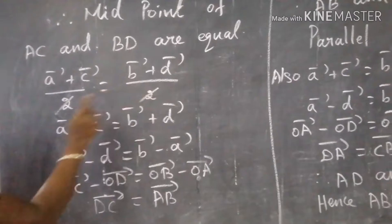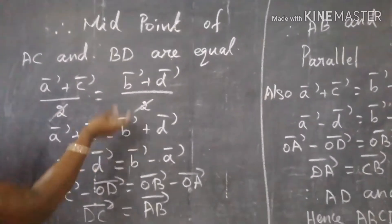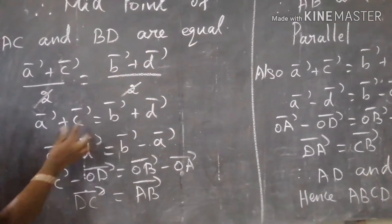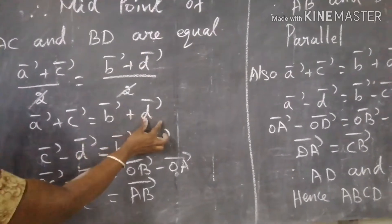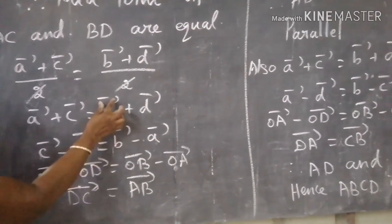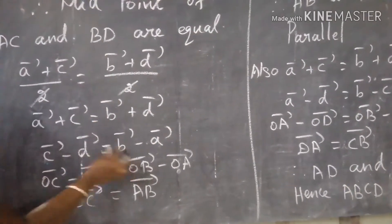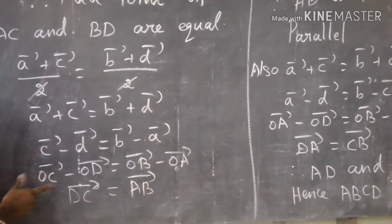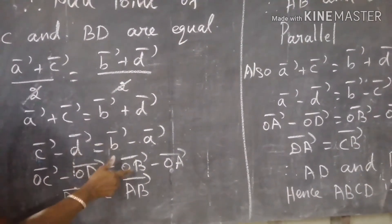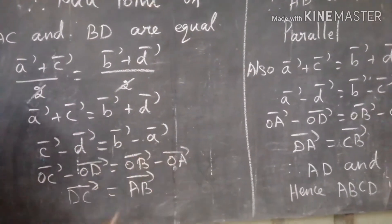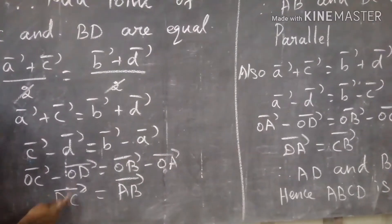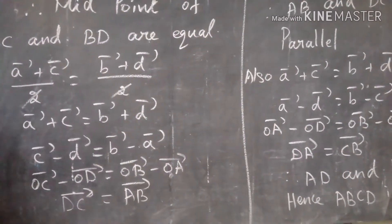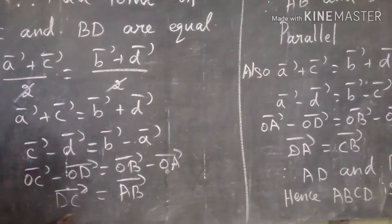The 2s cancel, giving A plus C equals B plus D. Rearranging: C minus D equals B minus A, so OC minus OD equals OB minus OA, which means DC equals AB. Therefore AB and DC are equal and parallel.